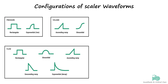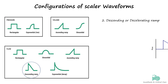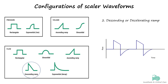The second type is the descending ramp, or decelerating ramp, which is characterized by a gradual decrease in value over time. This means the waveform starts at a higher value and then slowly tapers off as the breath progresses.